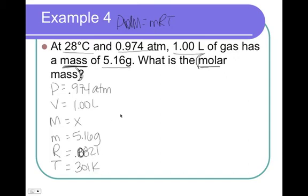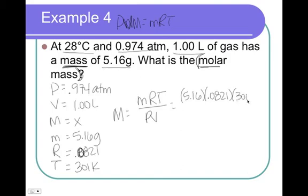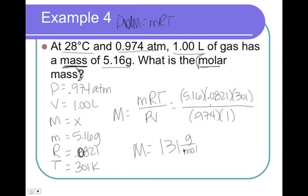Rearrange this guy for big M, and you get mRT over PV. Plug everything in, pressure and volume. Plug all this into your calculator and you end up with molar mass equals 131 grams per mole. Look on your periodic table and there's only one element that has anywhere near this mass and that element is xenon.